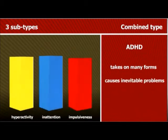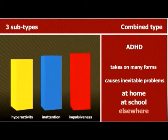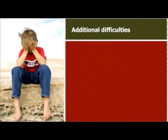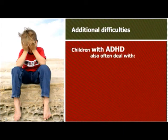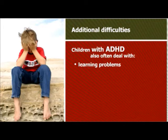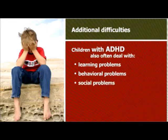Either way, it causes inevitable problems at home, at school, and elsewhere. Besides the basic challenges of this condition, children with ADHD often have to deal with other complications. These include learning problems such as difficulties with reading, writing, or making calculations, and behavioral problems such as disobedience, a tendency to quarrel, and aggressive reactions. These in turn cause social problems, making it harder for them to make friends, and emotional problems such as being afraid for no apparent reason or being depressed.